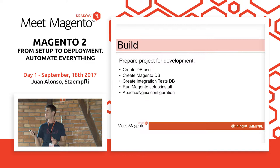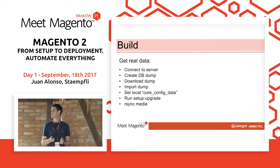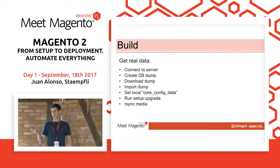These are not too many steps, and you can automate them if you are using Docker, for example. But the thing is that when you want to work, this is usually not enough. You also want to have some real data from a server. So if you want to get this data locally, you go through these steps: connect to the server, create a database dump, download the dump, import it locally, run setup upgrade to update your database schema, update the core config data for your local setup, sync the media from the server if you need images, create the cache, and then you are ready to work.